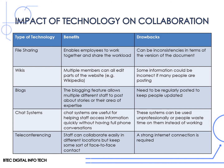Blogs allow people to post about stories or their area of expertise in a business, however they need to be regularly posted to keep people updated. Chat systems are really useful for helping staff access information quickly without having full phone conversations, however these systems can be used unprofessionally or people waste time on them instead of working. Teleconferencing means that staff can collaborate easily in different locations but keep that level of face-to-face contact, though a strong internet connection is required.